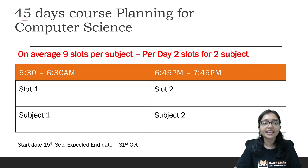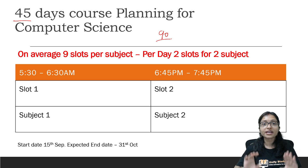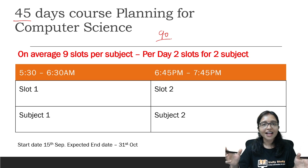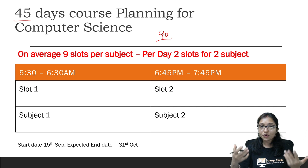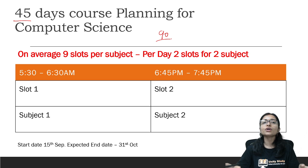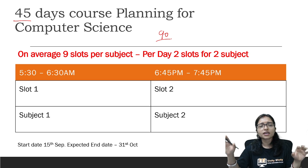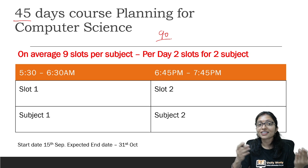45 days means you are going to get 90 slots in total. Per day we will learn in two slots, covering two subjects in parallel. That's why per subject I am giving you on average 9 slots, so although it is a crash course, most topics will be covered in depth with question practice also.